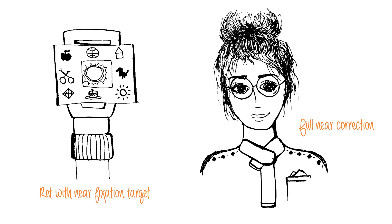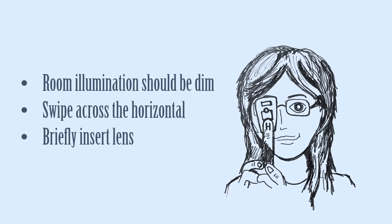Testing MEM is easy. You need a retinoscope and you attach your fixation card to it — it can be letters, numbers, whatever you like. The patient should be wearing their full correction at near. The room illumination should be dim, but with the target illuminated of course. Examine the reflex in the horizontal meridian, swiping across, and then briefly insert the lenses into the line of sight for a couple of seconds.